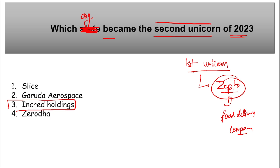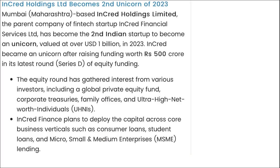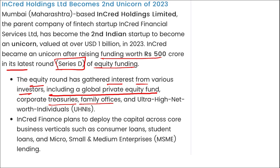INCRED Holdings Limited, the parent company of the fintech startup INCRED Financial Services, became the second Indian startup to achieve unicorn status, valued at 1 billion dollars. INCRED became a unicorn after raising ₹500 crore in the latest round of Series D equity funding. The equity round gathered interest from a global private equity fund, corporate treasuries, family offices, and ultra-high-net-worth individuals.